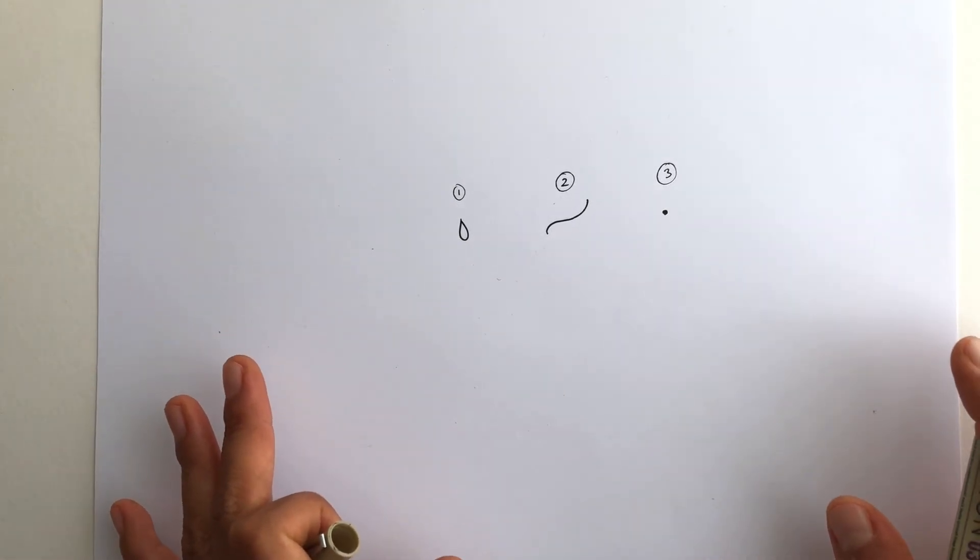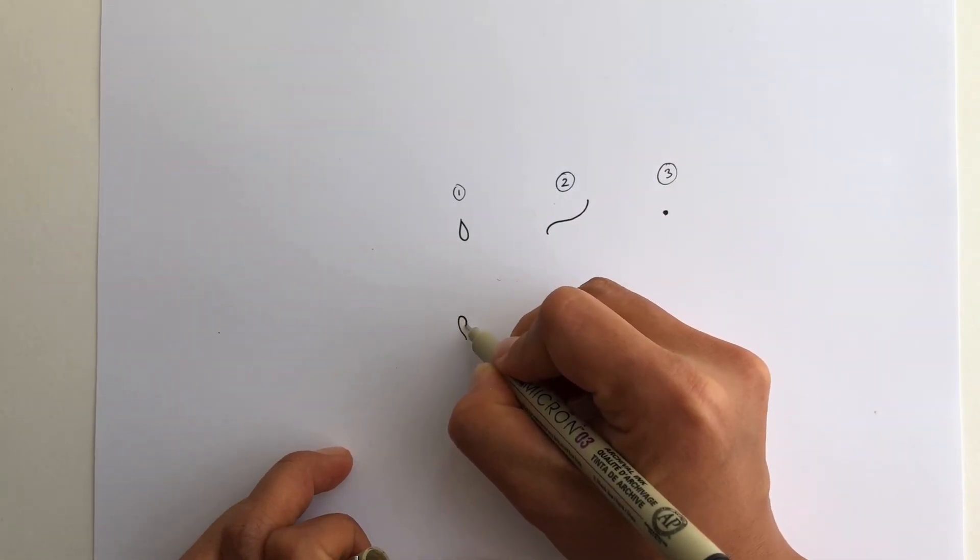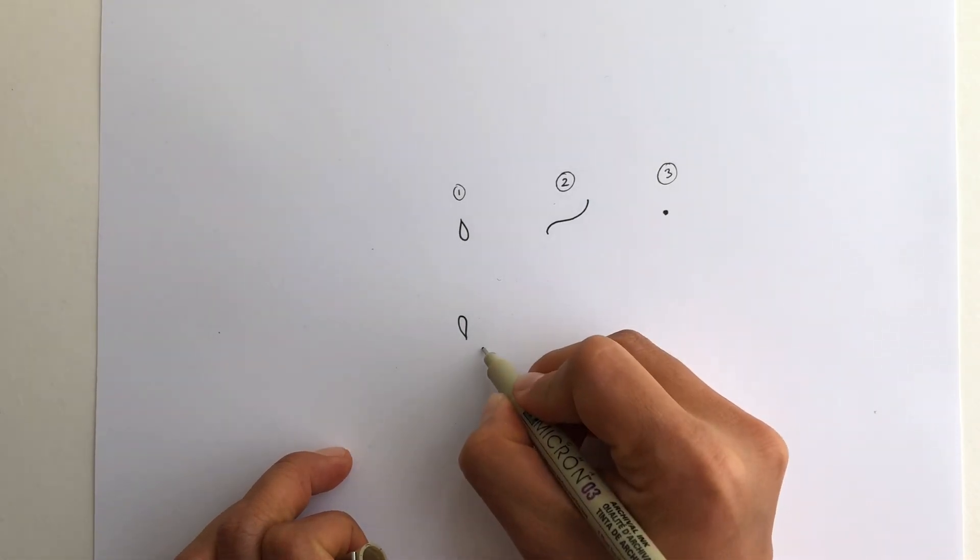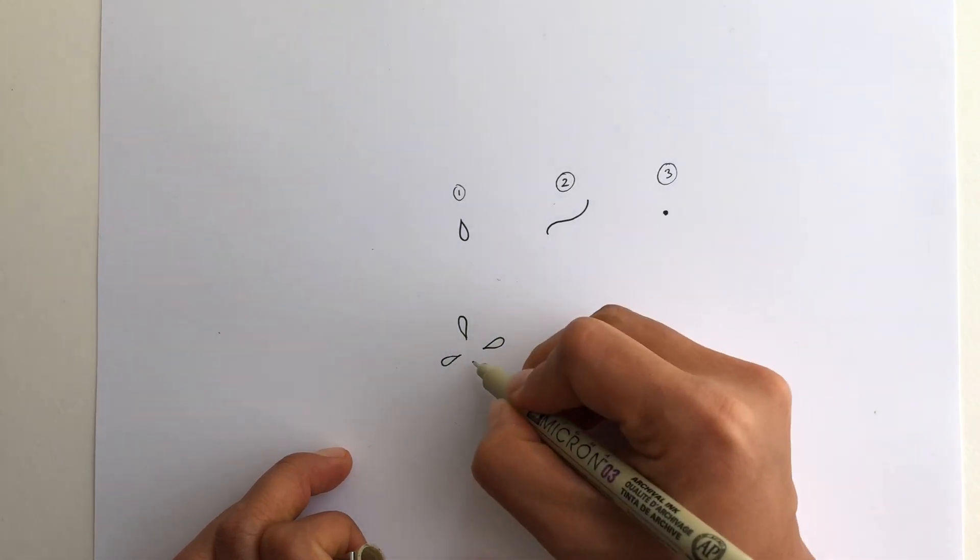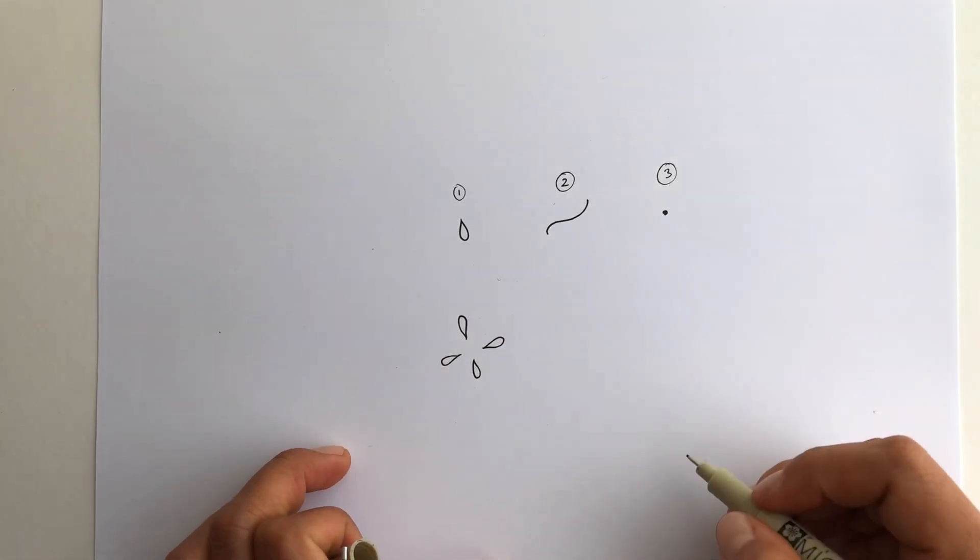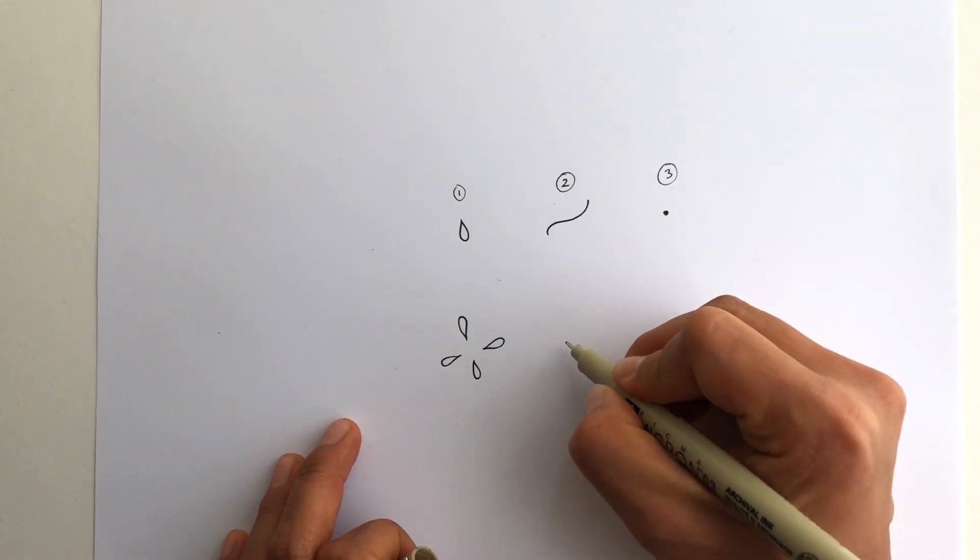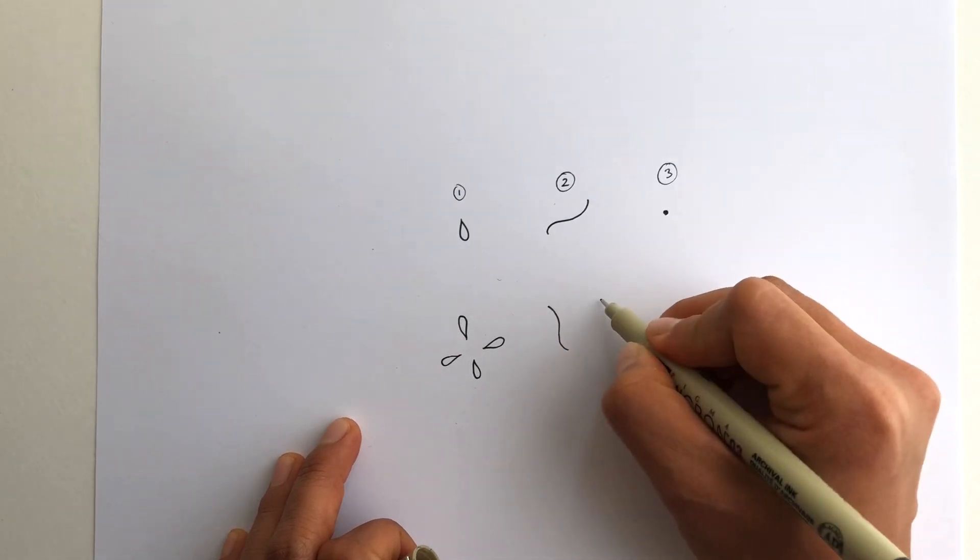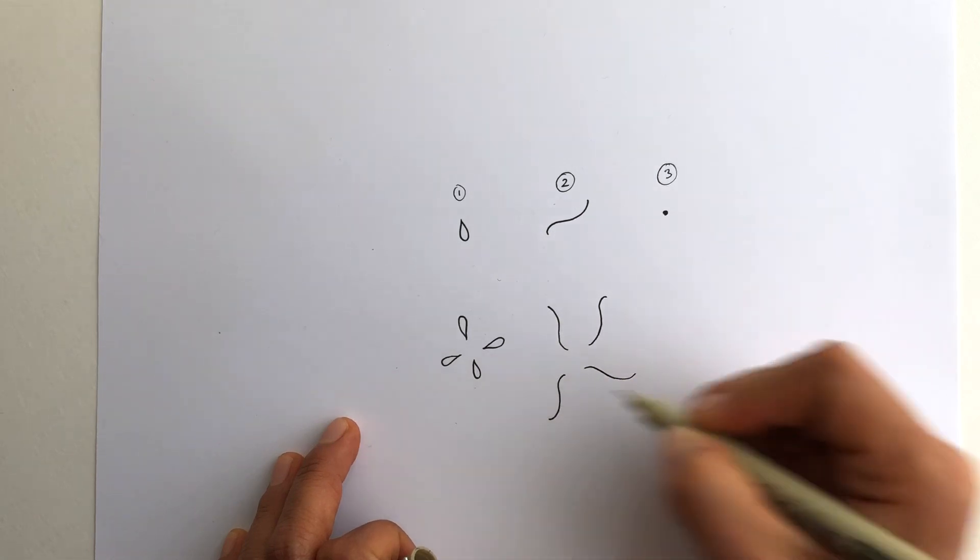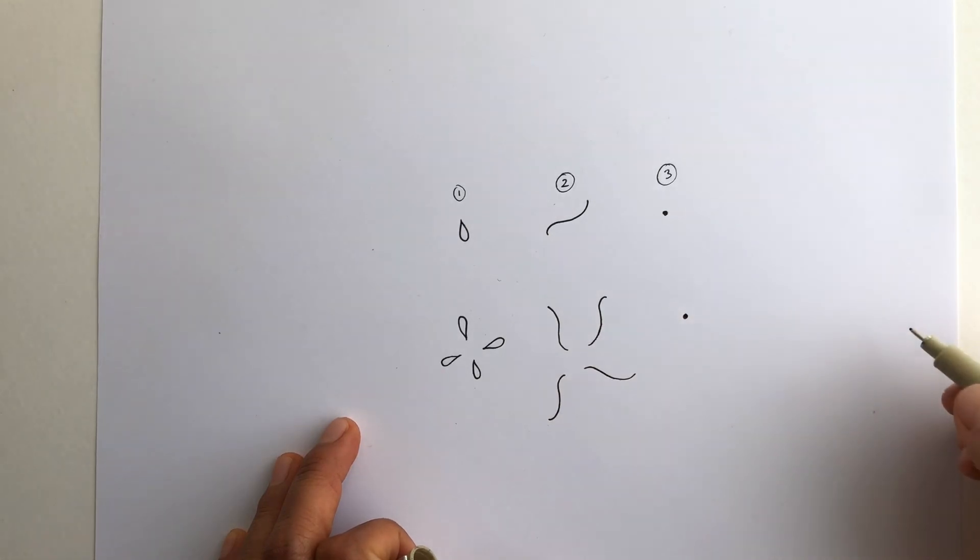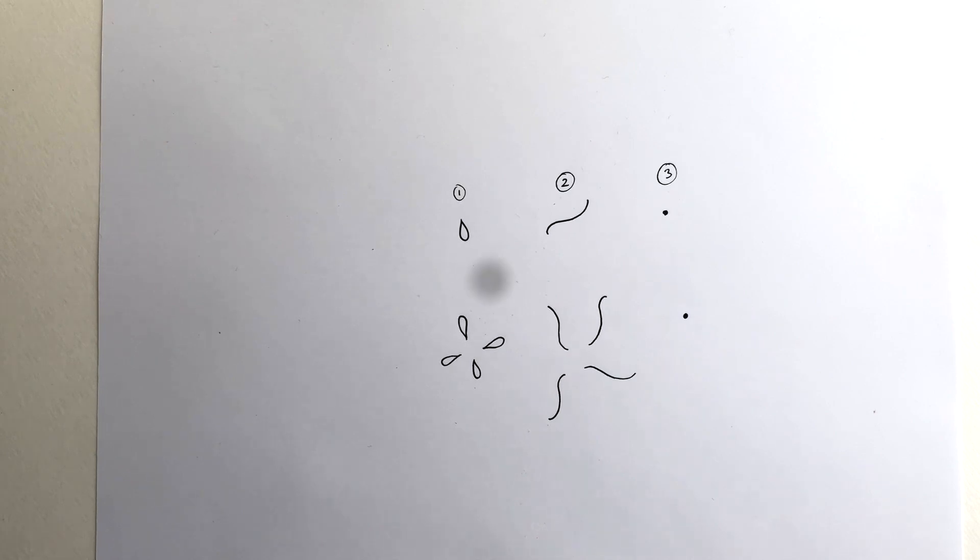And you can practice those until you get comfortable with them. Like the teardrop, for example, maybe draw this way, draw this way, try drawing it in all different directions. You don't have to be an expert, they don't have to be perfect. If you don't like drawing it in a certain way, you can always turn your page and draw it the way that feels comfortable to you. Same thing with an s shape, just try different directions. The dot we don't really need to practice, that's just a dot. But those are your three fundamental shapes, and next we're going to look at how to put them together.